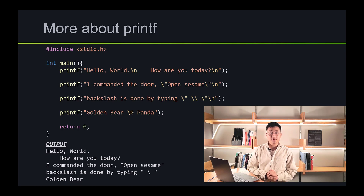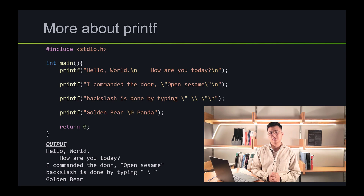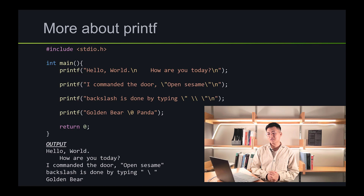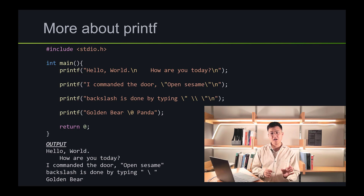The first print statement is about new line characters. As you can see in the output, it says 'hello world' with a new line character and a tab, and then it says 'how are you today?'